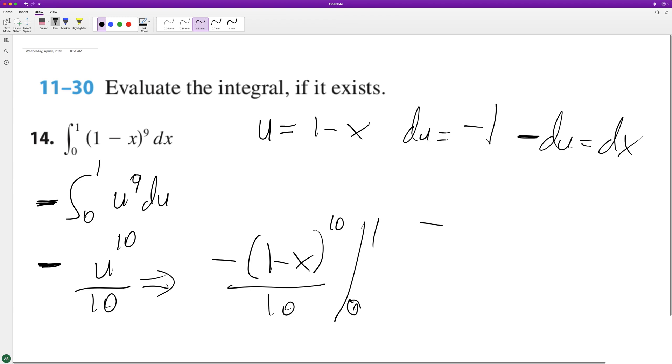So this ends up being equal to negative, substitute back in one minus one raised to the 10th over 10 minus, and then we plug in zero minus one raised to the 10th over 10.